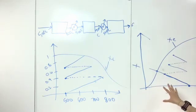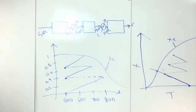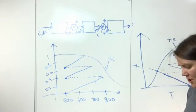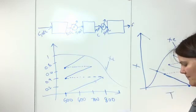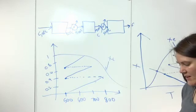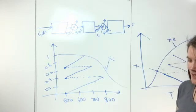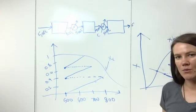The point of this is to understand how your entering temperature can affect what conversion you get. There is an example on page 518 in the book — example 8-7 — which I won't go through in detail, but it covers calculating the interstage cooling, including the heat load, the coolant flow rate, and the heat exchanger area.